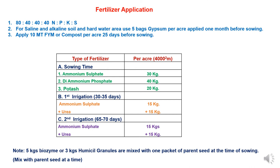For fertilizer application in mustard hybrid seed production, the recommended dosage per acre is: Nitrogen 80 kg, Phosphorus 40 kg, Potassium 40 kg, and Sulfur 40 kg. For saline and alkaline soils or areas with hard water, gypsum should be applied at 5 bags per acre, one month before sowing for better soil incorporation. Farmyard manure or compost at 10 tons per acre is also recommended, applied 25 days to one month before sowing for better incorporation and decomposition into the soil.